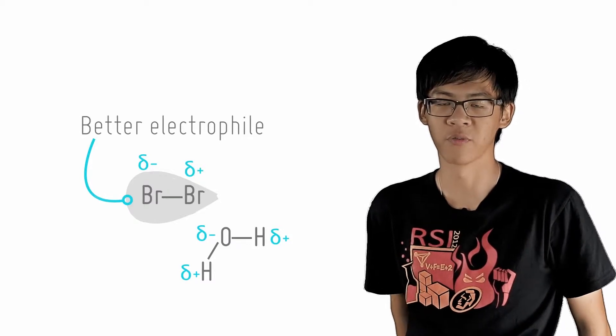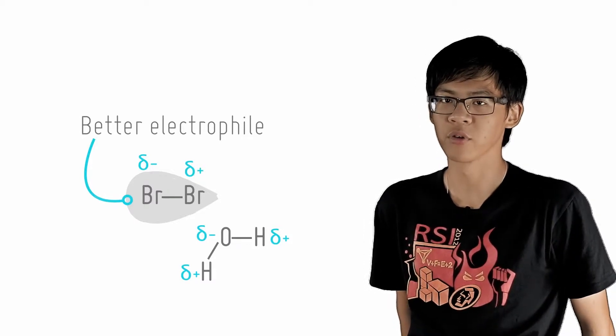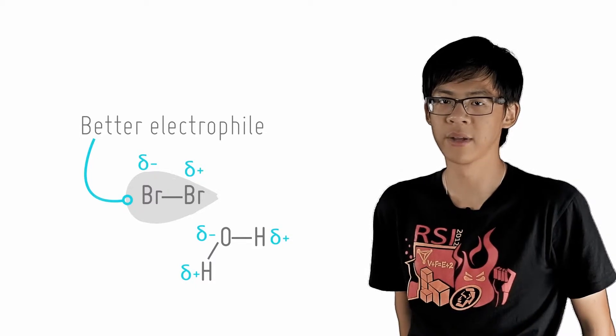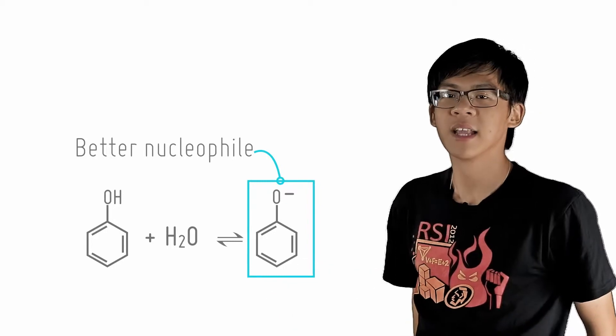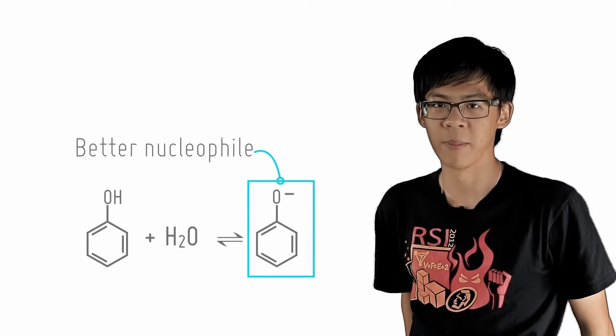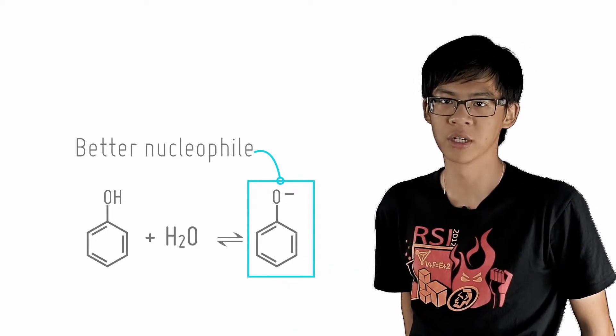Another thing to consider is that using water will ionize phenol partially to form the phenoxide ion as shown by the equilibrium reaction here. The negative electron-rich phenoxide will make a better nucleophile than the neutral phenol itself.